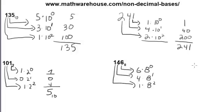Alright? 6 times 8 to the 0 is just 6. 4 times 8 to the 1st is 4 times 8, or 32. And 1 times 8 squared is just 64. So, what do we do with these numbers? We just add them up.